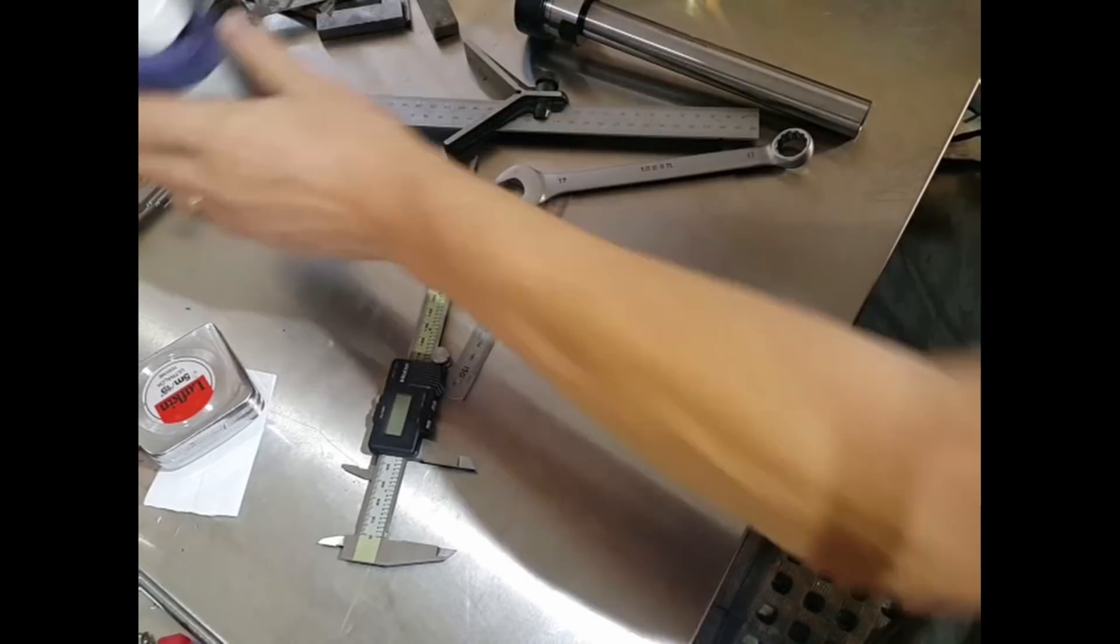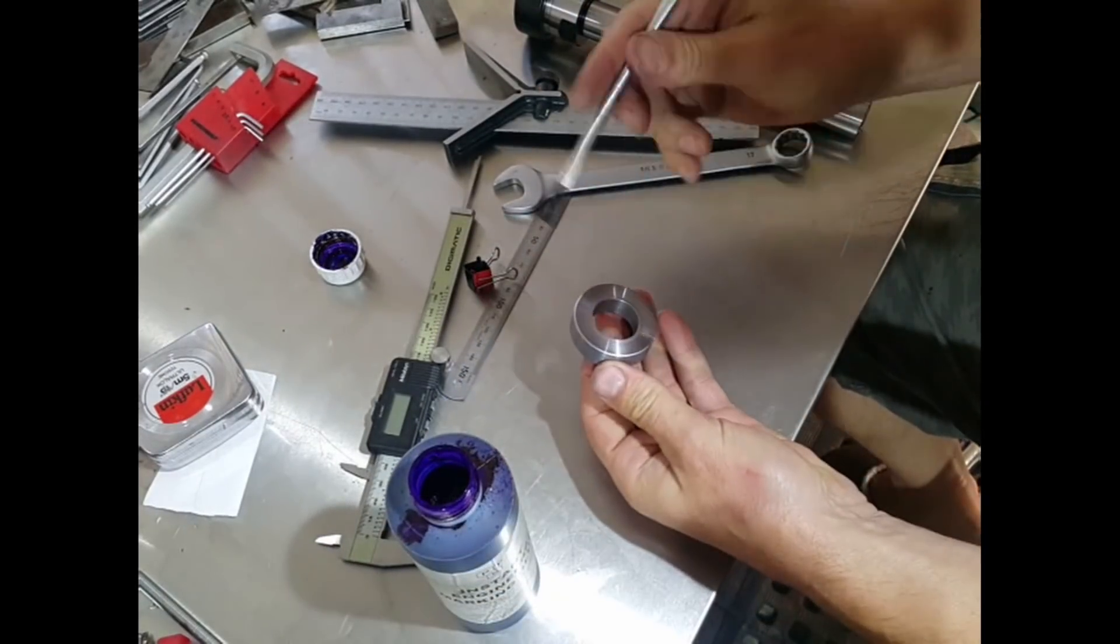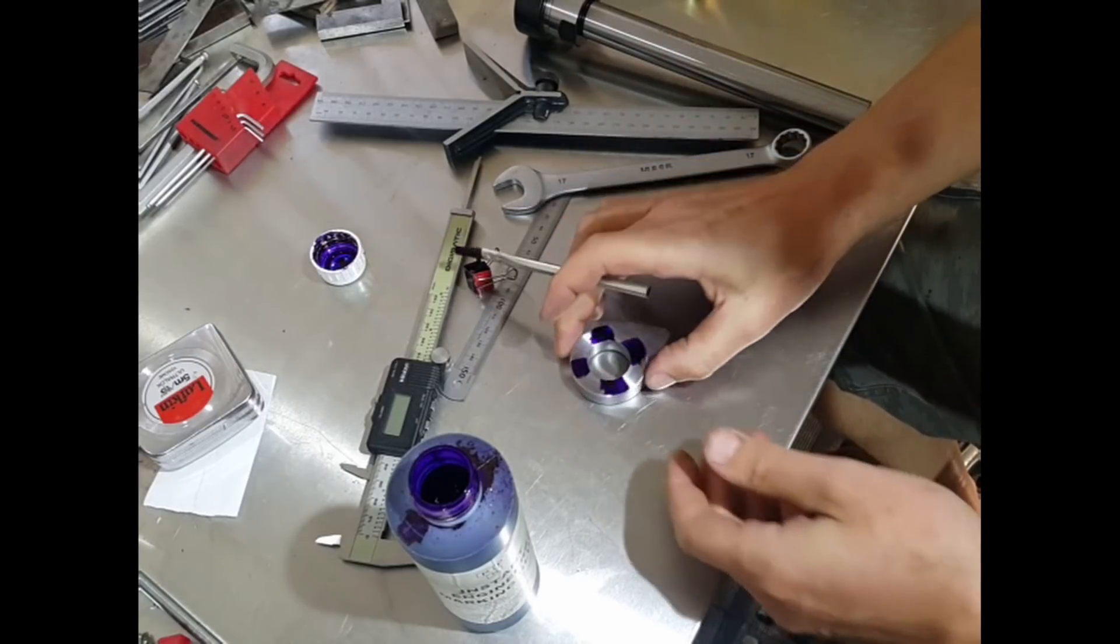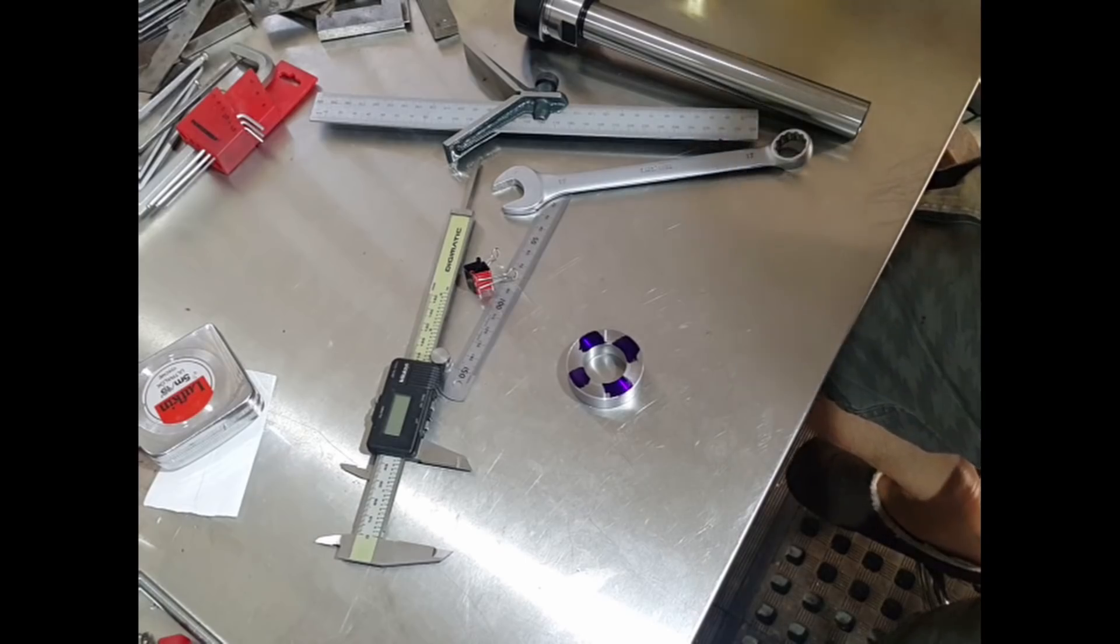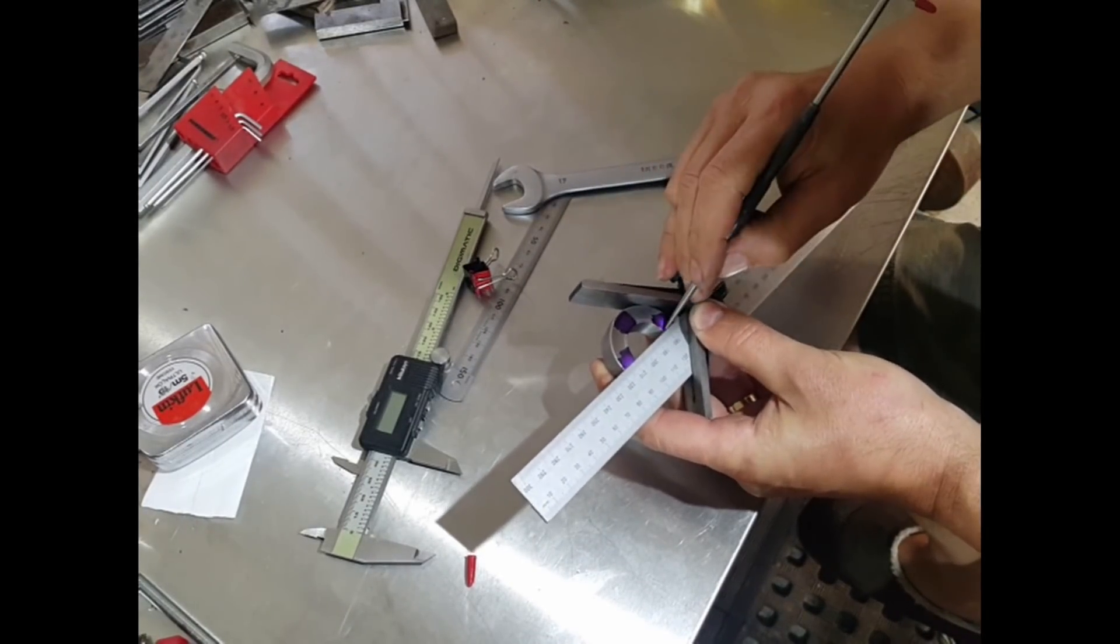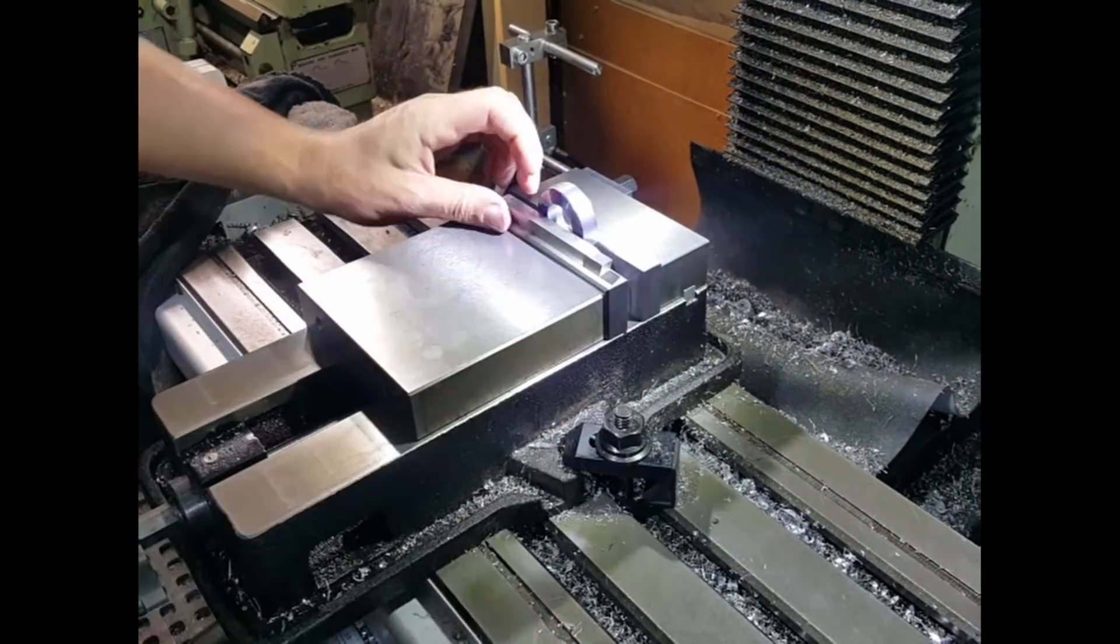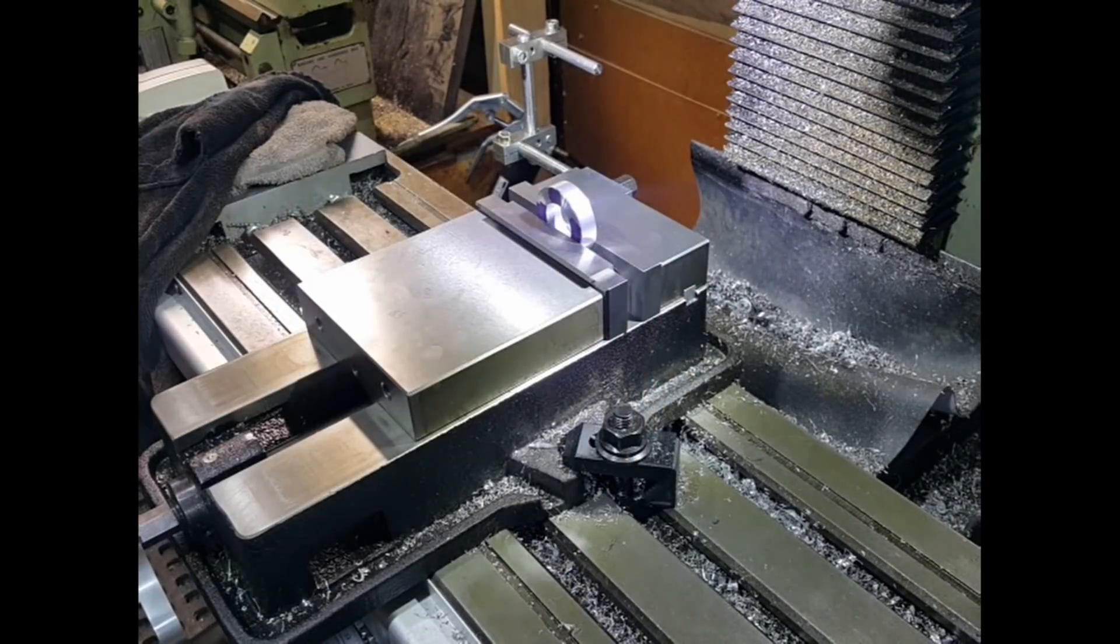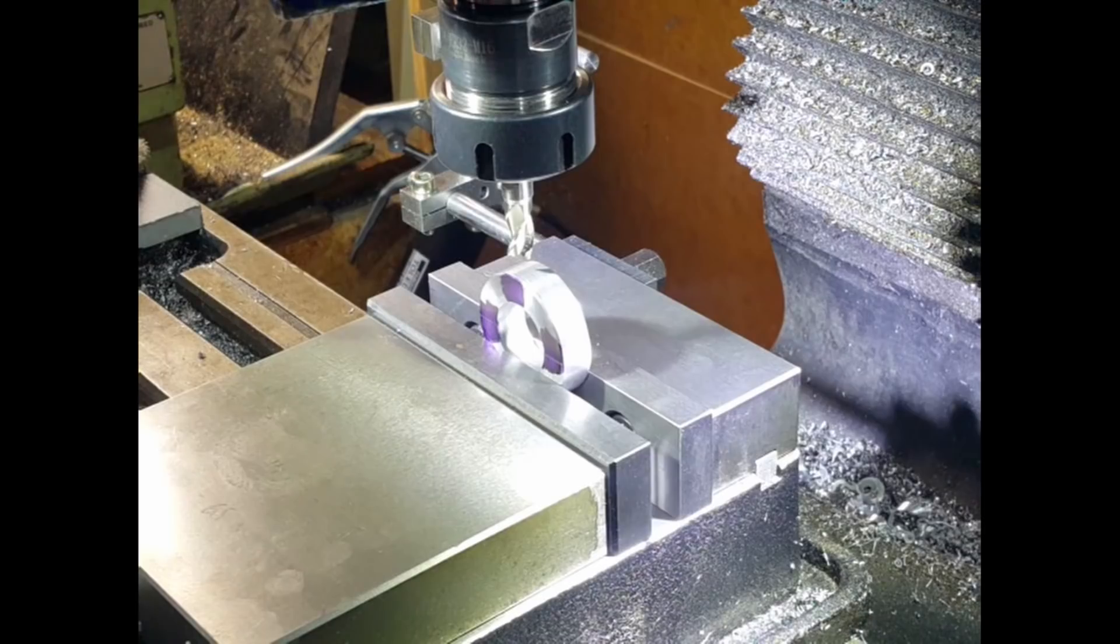I turned the ring on the lathe just from some bar stock, and here I'm going to lay out some 90 degree divisions. So I'm just putting some layout dye on and then I'll mark those. So I just eyeballed the setup on here—as you can see I'm just using some parallels.